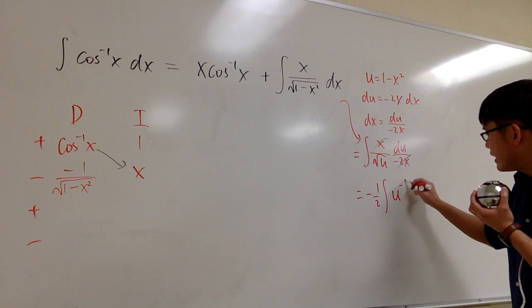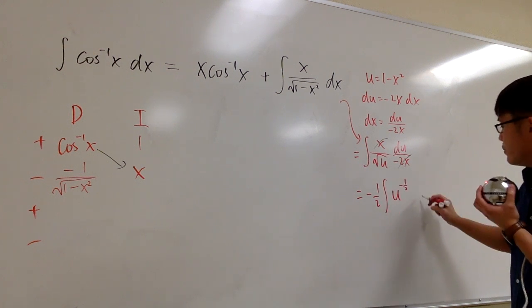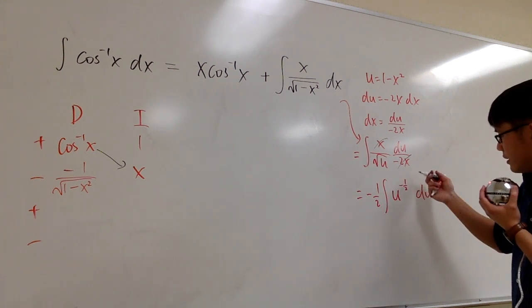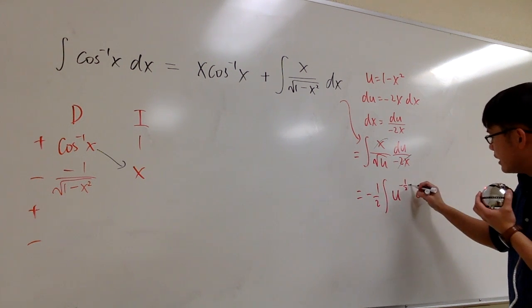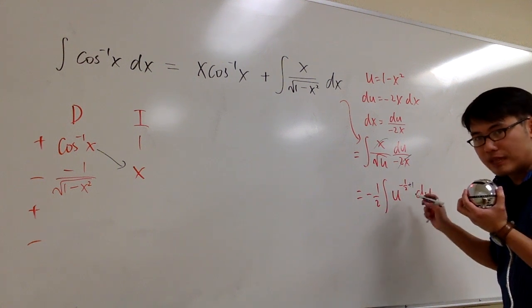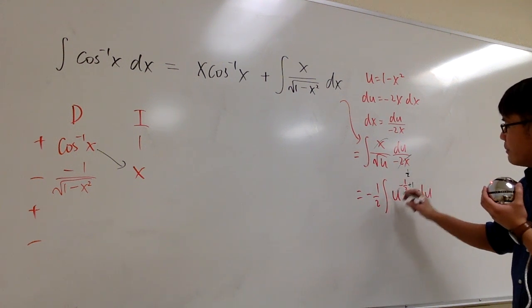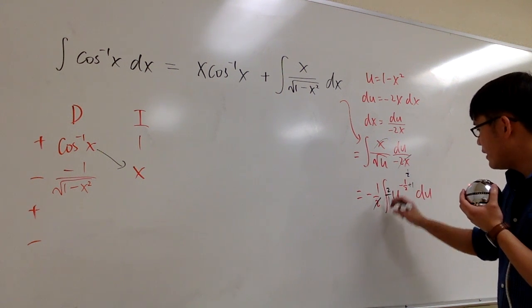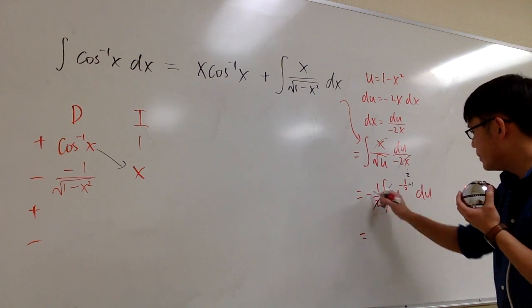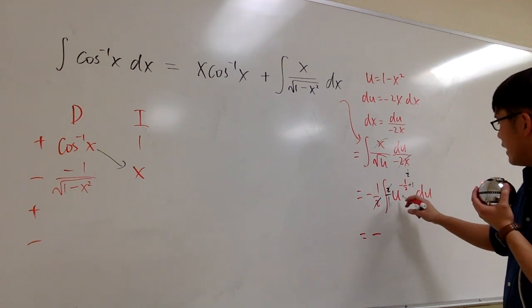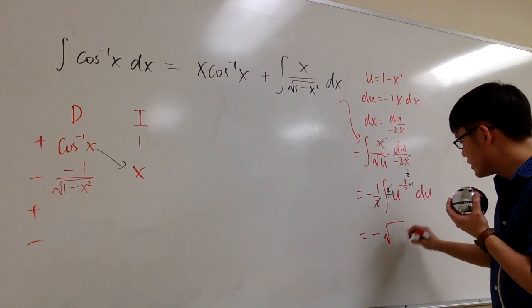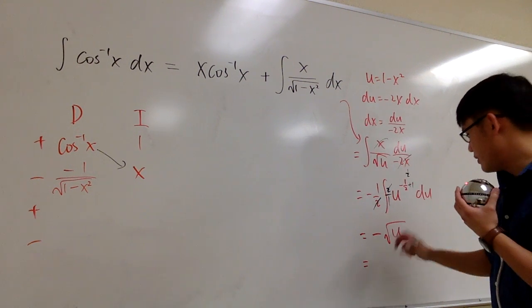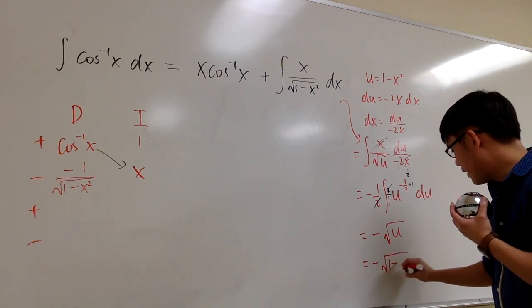This is 1 over square root of u, which is the same as u to the negative 1/2 du. Using the power rule in reverse, I add 1 first: negative 1/2 plus 1 is positive 1/2. Then divide by 1/2, which is the same as multiplying by 2. The 1/2 and the 2 cancel, so this gives negative u to the 1/2, which is negative square root of u. Since u equals 1 minus x squared, this is negative square root of 1 minus x squared.